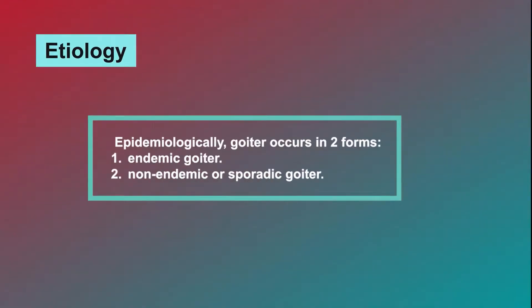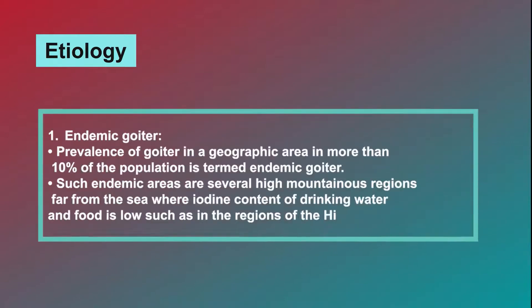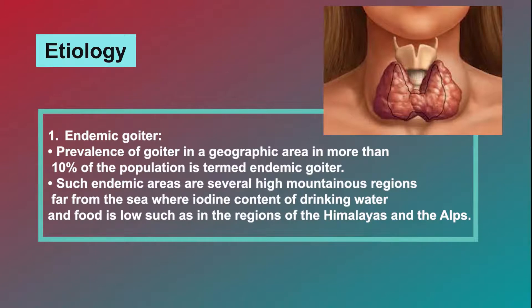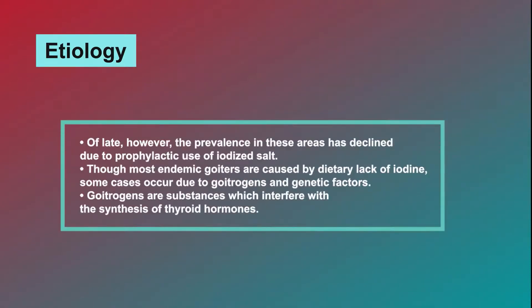Epidemiologically, goiter occurs in two forms: endemic goiter and non-endemic or sporadic goiter. Endemic goiter: prevalence of goiter in a geographic area in more than 10% of the population is termed endemic goiter. Such endemic areas include several high mountainous regions far from the sea where iodine content of drinking water and food is low, such as the Himalayas and the Alps. Of late, however, the prevalence in these areas has declined due to prophylactic use of iodized salt. Though most endemic goiters are caused by dietary lack of iodine, some cases occur due to goitrogens and genetic factors.